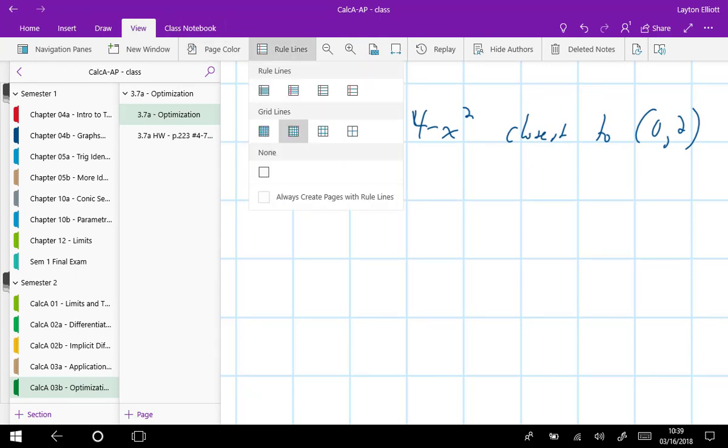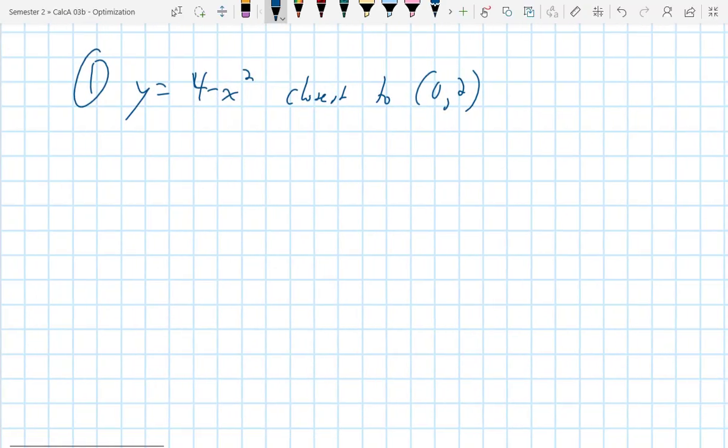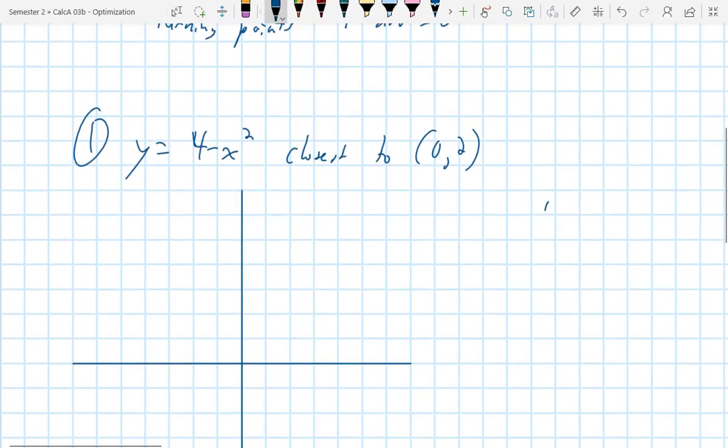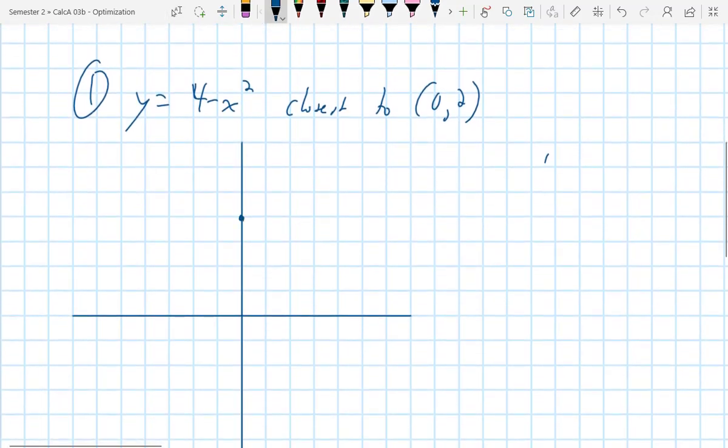So you're going to create a function. It's not a function that's present here, but you're going to create a function. And if you really are not seeing what it is you need to do, turn on a grid. But just sketch a graph of what it looks like. So y equals 4 minus x squared is a 4. It's just a standard, like negative 1. So there, there, and then 2, 4. And then closest to (0, 2). So (0, 2) is right here.